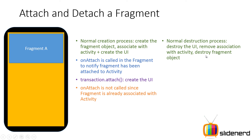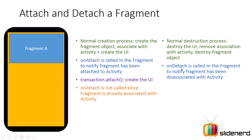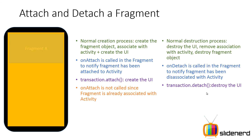With the normal destruction process — when you call fragment.remove — the UI is destroyed, the association with the activity is destroyed, and onDetach is called to notify that the fragment has been disassociated. But with transaction.detach, you're simply hiding the fragment, not destroying it. So the onDetach lifecycle method does not get called because you're not destroying the link between the fragment and the activity. We'll work this out on Android Studio with a clear example.